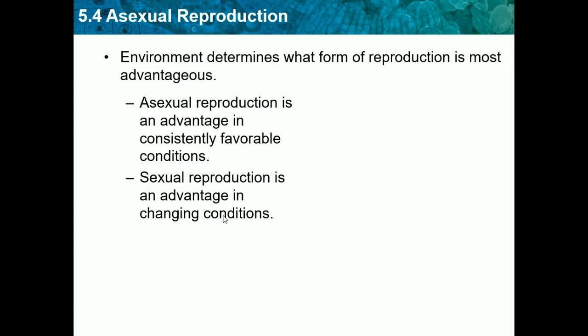To clarify asexual versus sexual reproduction, let's use giraffes as an example. Long ago giraffes all had short necks — which is true. Let's pretend they reproduce asexually. If all these short giraffes reproduced asexually, they would always produce the exact same short-neck giraffe. They could only eat brush on the floor and couldn't reach high tree leaves. If their environment was consistently favorable, there would always be enough floor plants to feed everybody — so asexual reproduction would be an advantage.